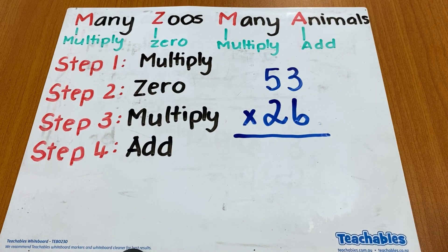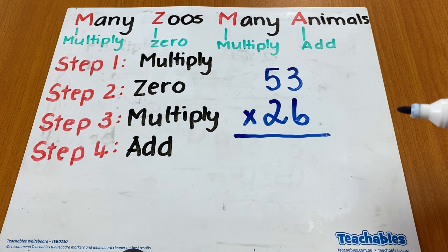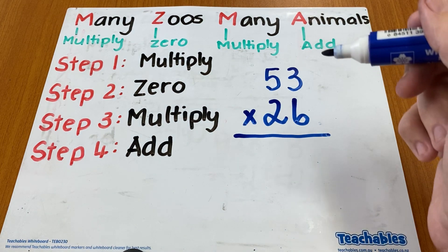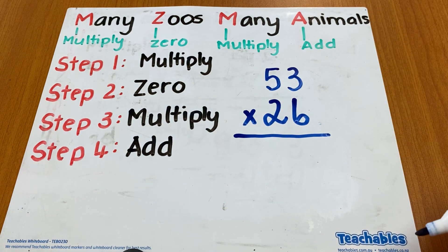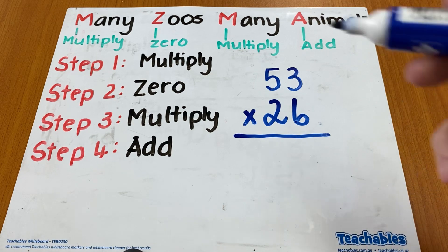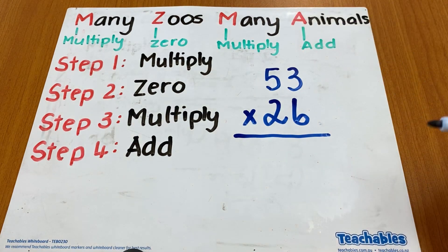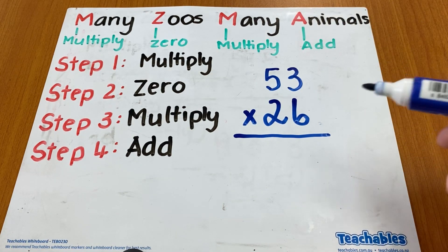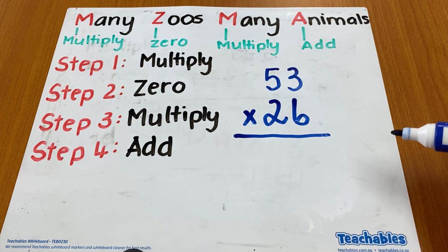In this video we're going to look at a strategy that helps with doing multiplication facts with numbers of two digits or more. It's called 'many zoos many animals' and the play is on the first letter of each of those words.